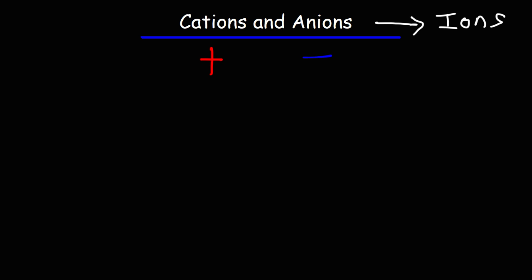Now you might be wondering how cations and anions are formed. Metals typically form cations and non-metals typically form anions.